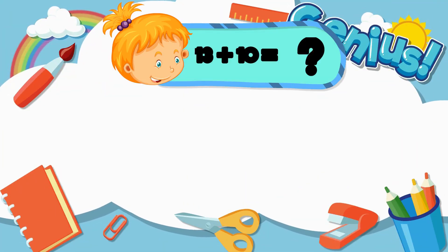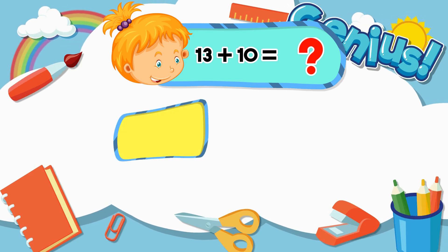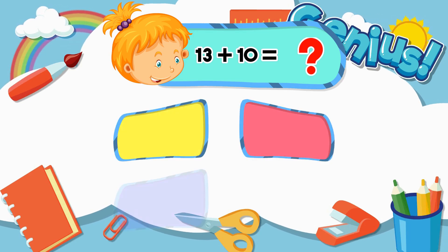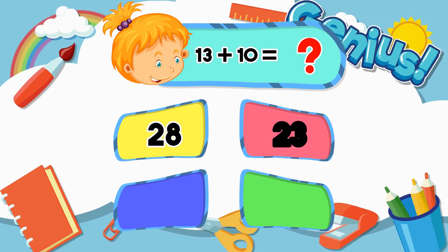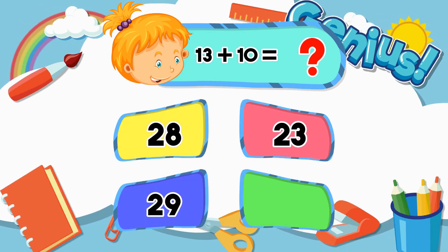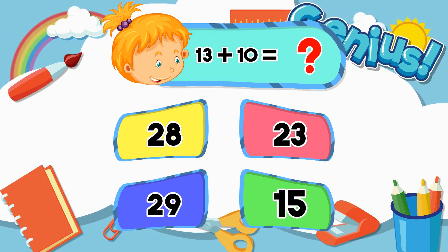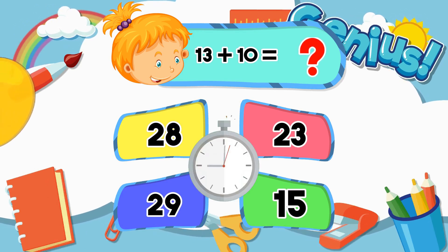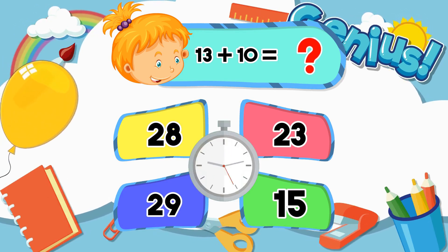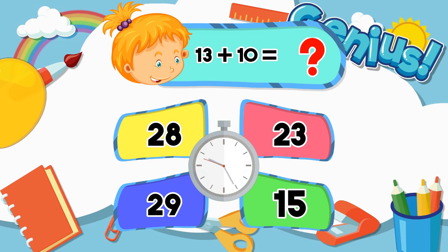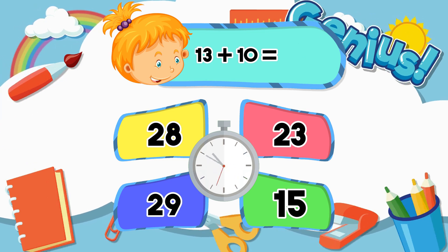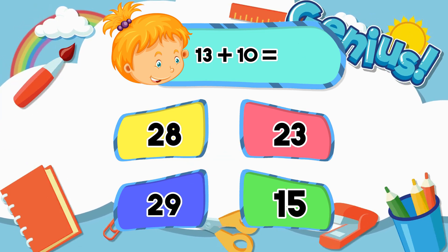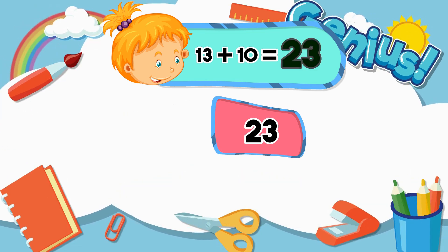What is 13 plus 10? Options: 28, 23, 29, 15. Answer: 23.